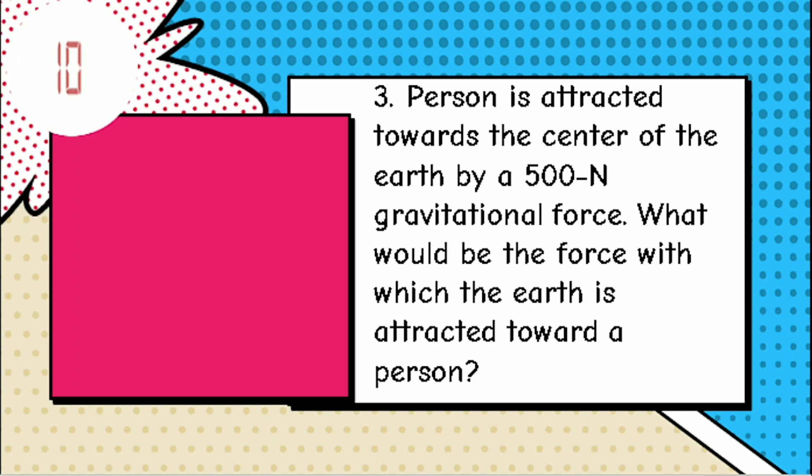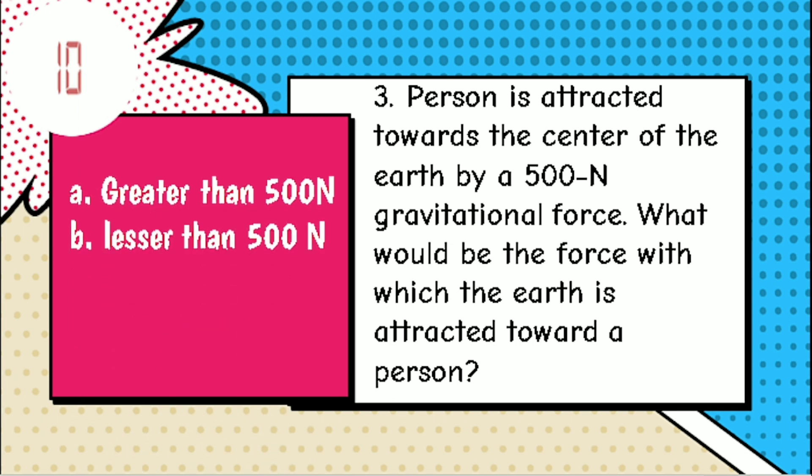Three: a person is attracted towards the center of the earth by a 500-newton gravitational force. What would be the force with which the earth is attracted toward that person? A) greater than 500 newtons, B) lesser than 500 newtons, C) 500 newtons, D) 1000 newtons. Type your answer.